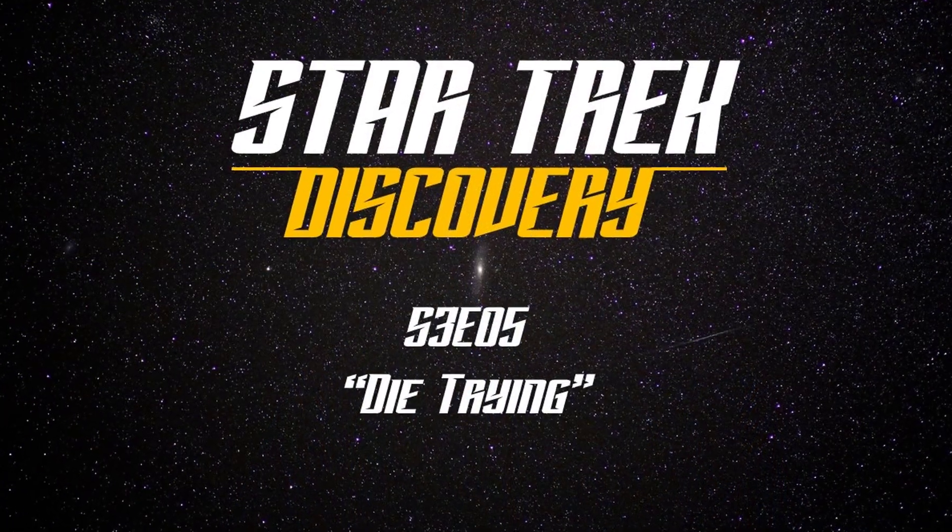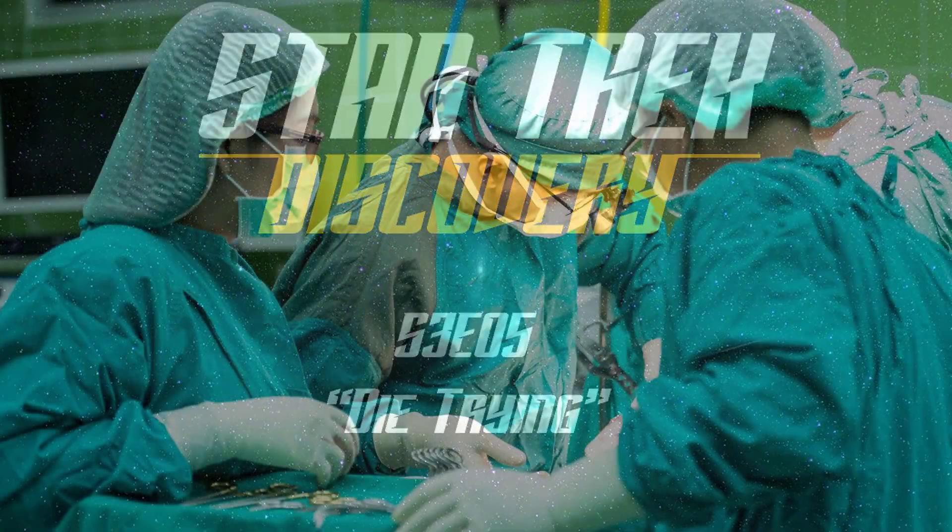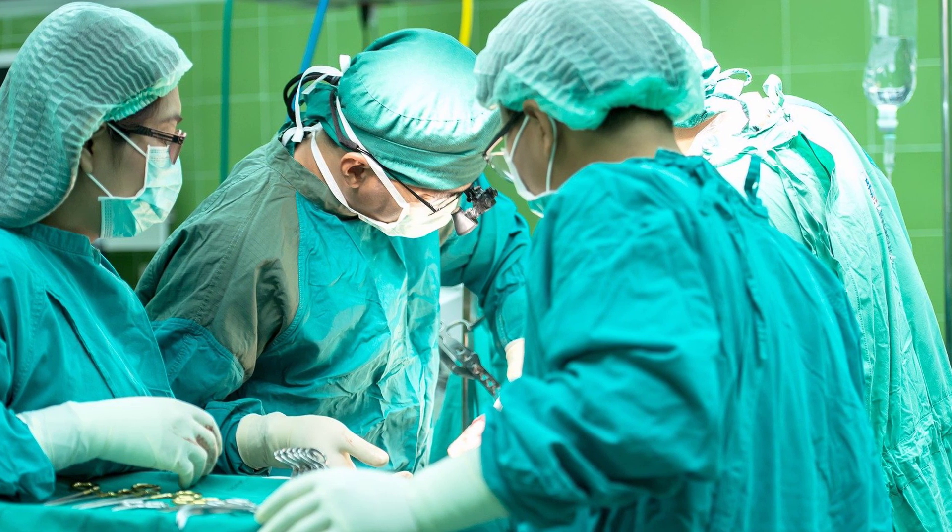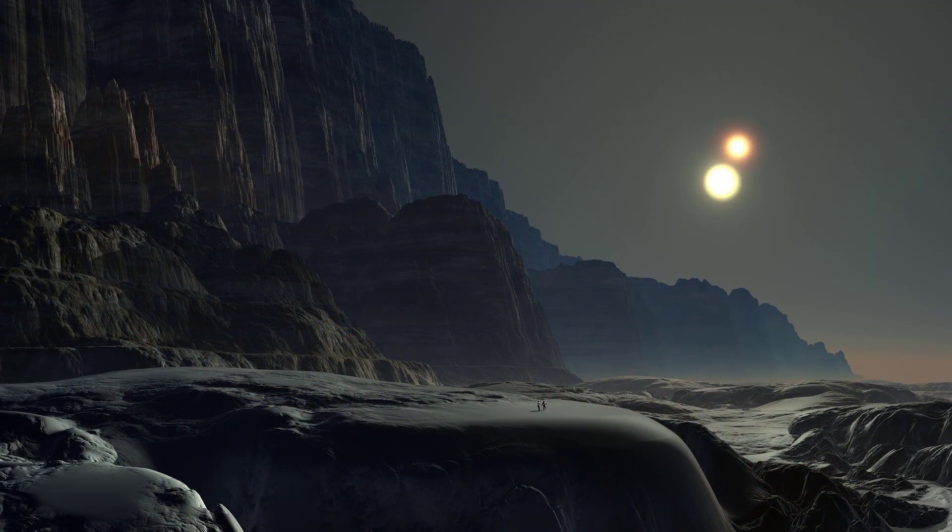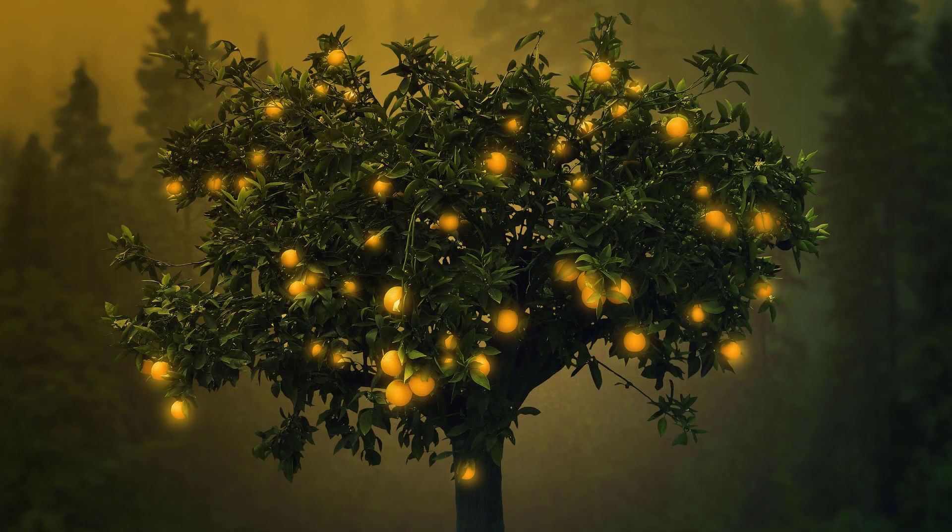In this episode, which is called Die Trying, the medical team that we see at Federation headquarters is trying to help some sick alien refugees. And the problem seems to have started when they stopped on a planet and they ate some of the indigenous plants or fruit there.